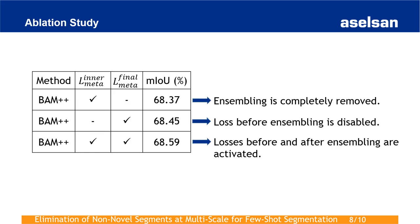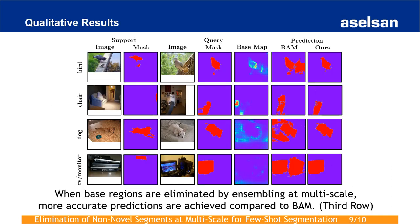We conducted controlled experiments to observe the effect of assembling at multi-scale. The first row shows our model performance without assembling at multi-scale. The model on the second row employs ensemble at multi-scale but does not compute loss before the ensemble. The model on the third row activates loss before and after the ensemble. We make two deductions: first, assembling at each scale is better in terms of segmentation performance than assembling at only a few scales; second, when losses before and after assembling are activated, the highest performance improvement is obtained, as shown in the third row. Our qualitative results also reveal that our model achieves more accurate results than BAM with the help of ensembling at multi-scale.